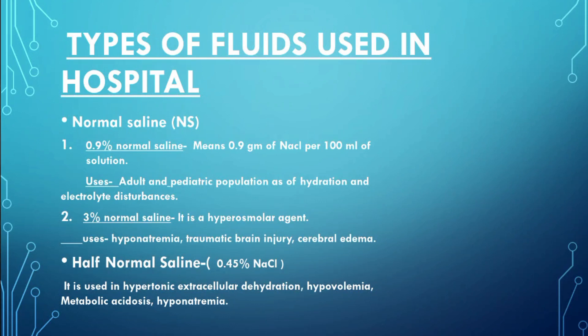Next is half normal saline, or 0.45% NaCl. It is used in hypertonic extracellular dehydration, hypovolemia, metabolic acidosis, and hyponatremia.